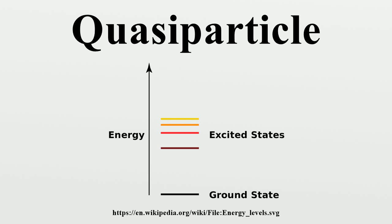Overview: Solids are made of only three kinds of particles: electrons, protons, and neutrons. Quasi-particles are none of these. Instead, they are an emergent phenomenon that occurs inside the solid. Therefore, while it is quite possible to have a single particle floating in space, a quasi-particle can only exist inside the solid.